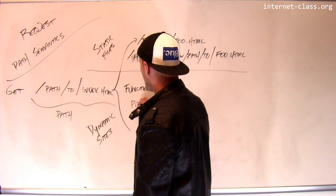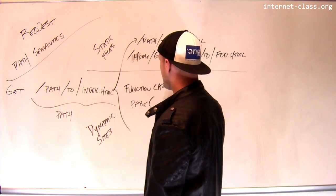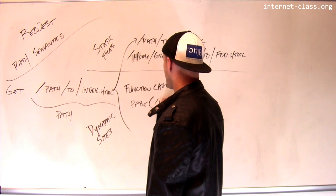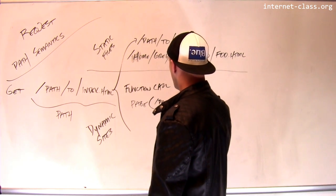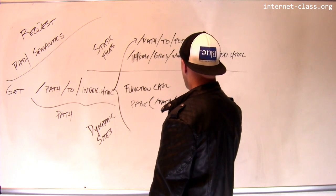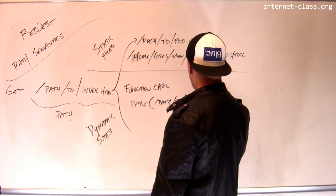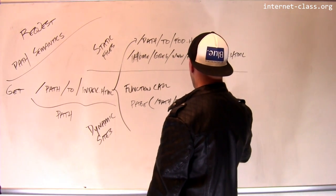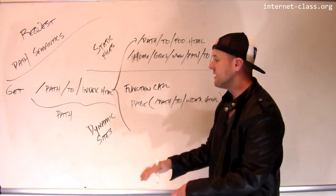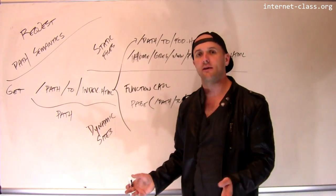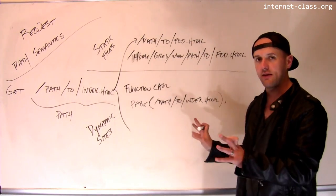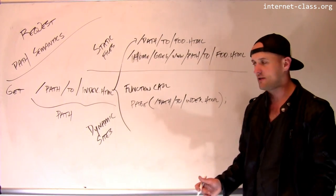For example, I could have a function called page that takes the path that was passed in. So this would get an argument path to index dot HTML in this case, and its job would be to return some HTML document. And it could just build it on the fly. There's no need for there to be a file sitting there that it's using. It just generates HTML.